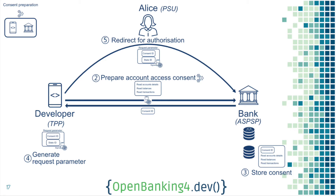Once that's done, the bank saves it in the database and returns a consent ID, which is a reference to that consent. When Alice goes to the bank, she needs context about what she's doing there — that's what the consent ID is used for. You generate what's called a request parameter: a signed message containing the consent ID, embedded as a GET parameter in the redirect to the bank.